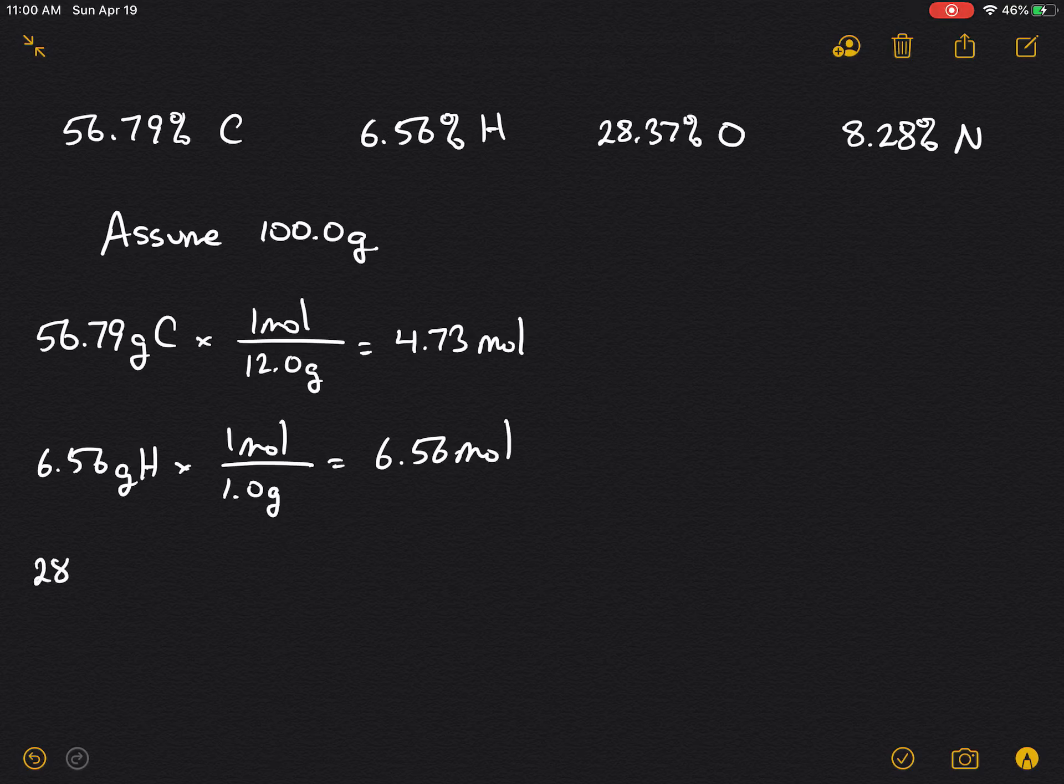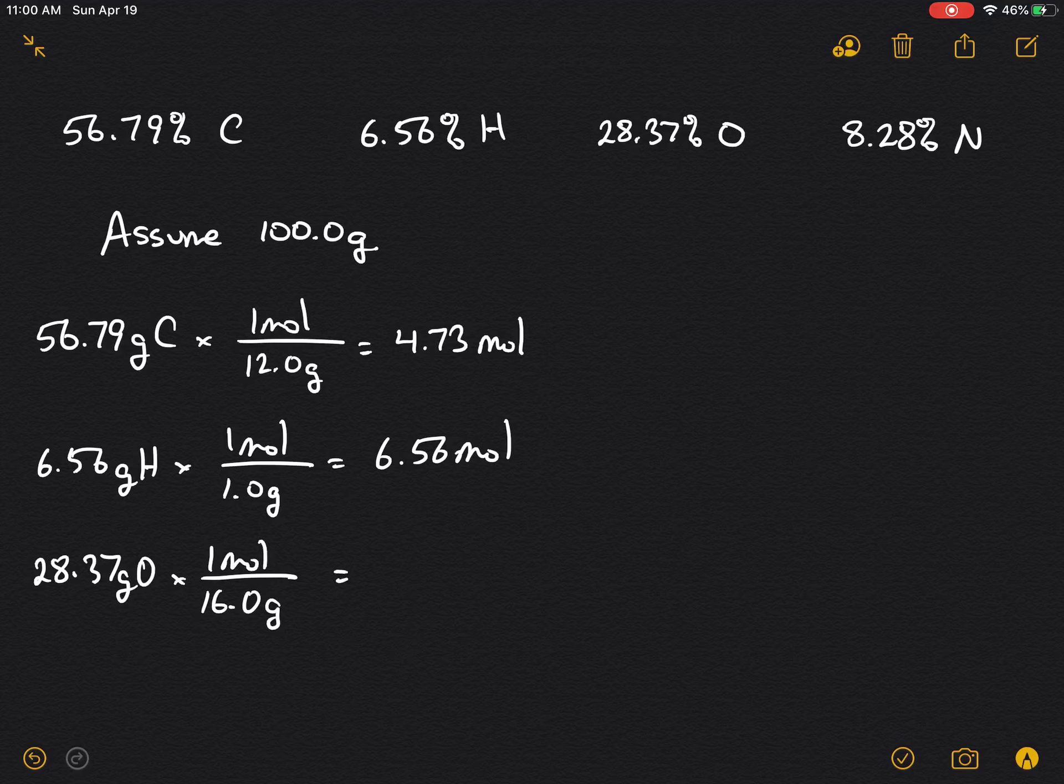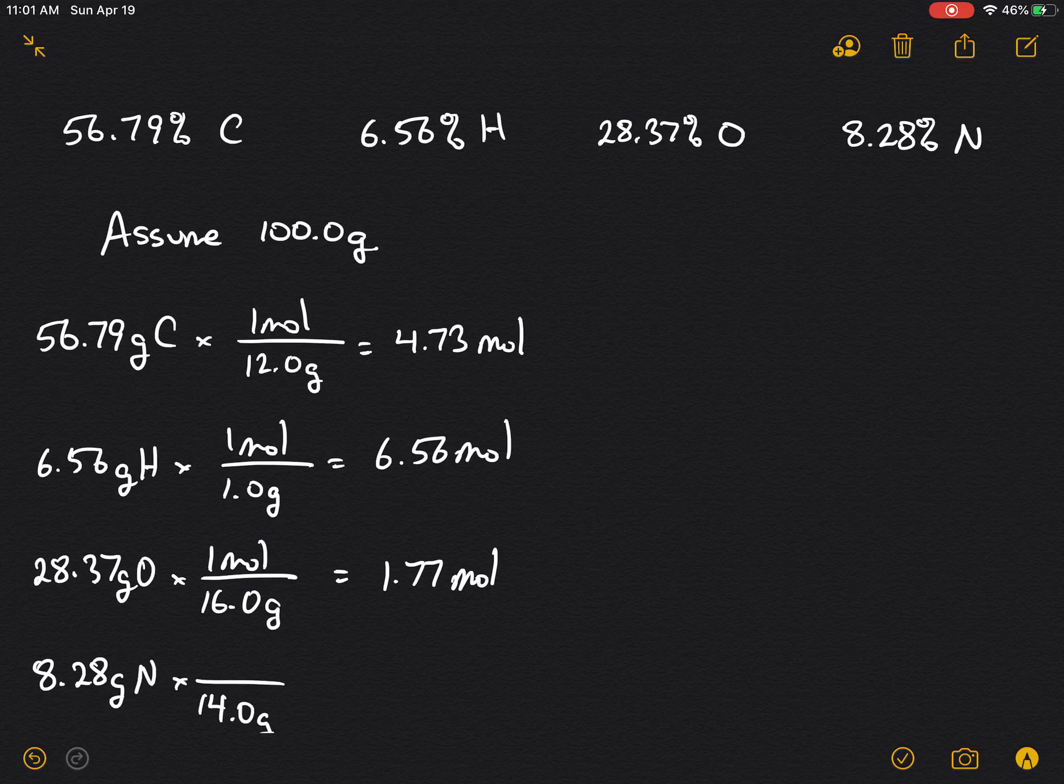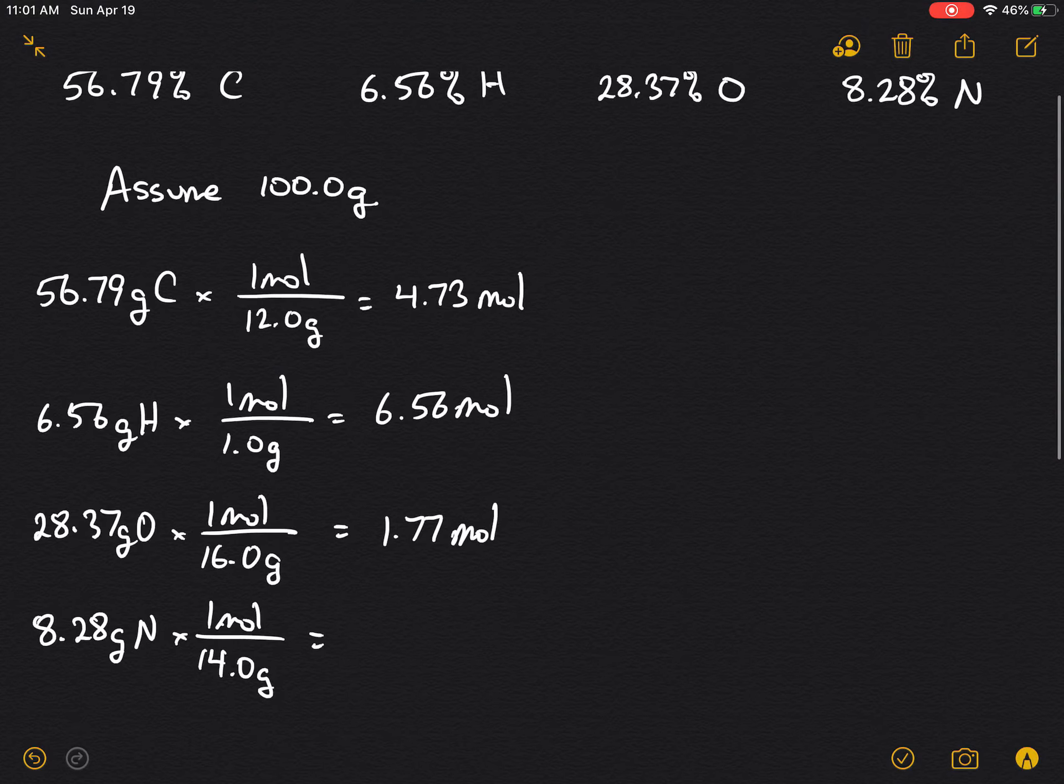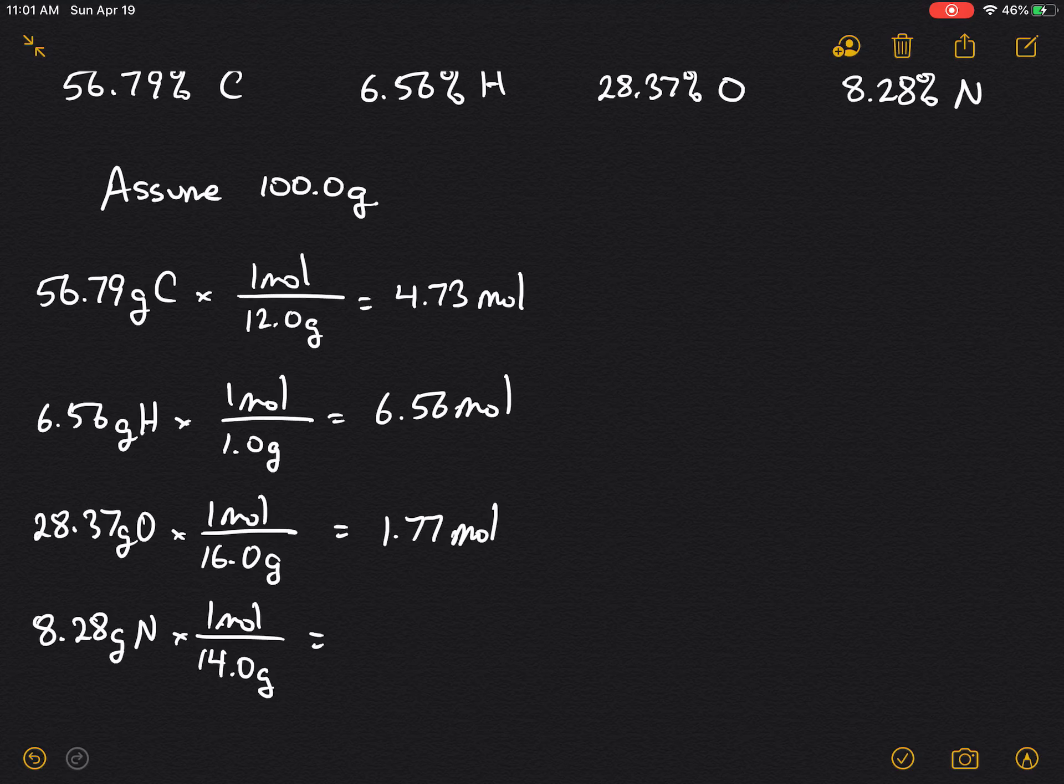28.37 grams of oxygen, 16.0 grams per one mole, which yields 1.77 moles, and 8.28 grams of nitrogen, 14.0 grams per mole, which is 8.28 divided by 14, 0.59 moles.